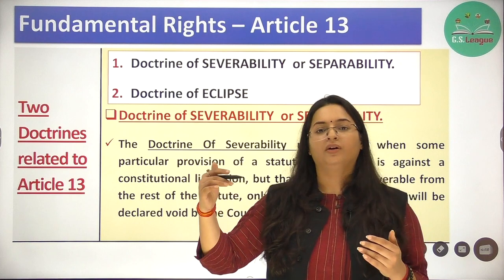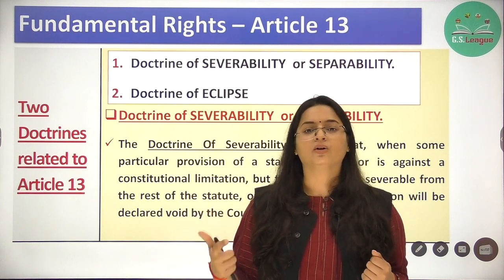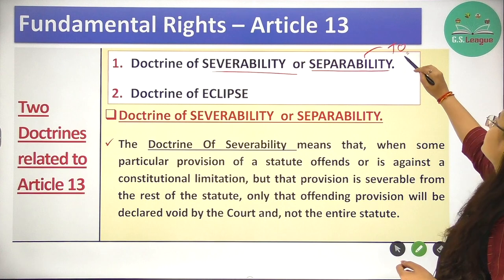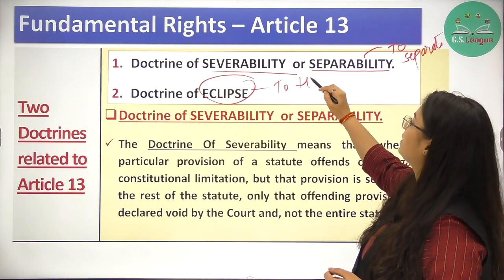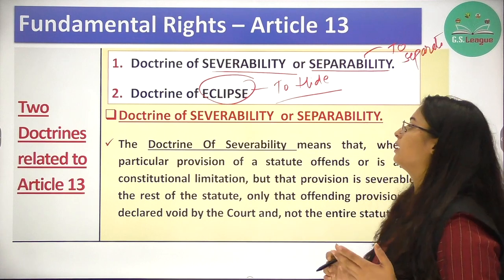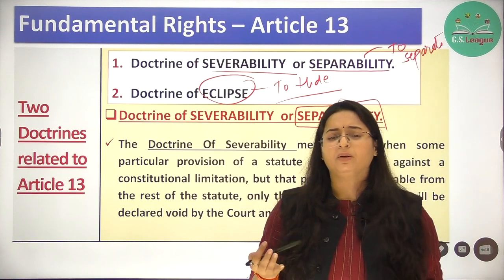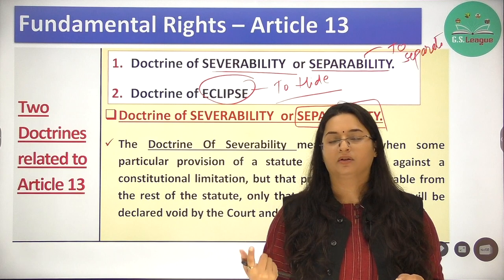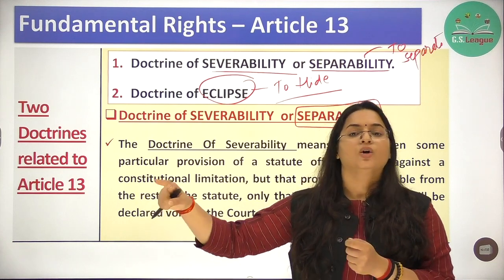Article 13 is governed by two doctrines: the doctrine of severability (or separability) and the doctrine of eclipse. The doctrine of severability means 'to separate.' If any particular provision of any law becomes inconsistent with Part 3 of the constitution — your fundamental rights — only that offending provision will be declared void by the court, and not the entire statute. The rest of the statute remains valid.